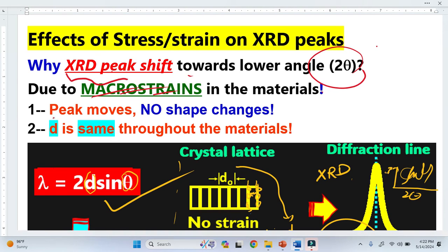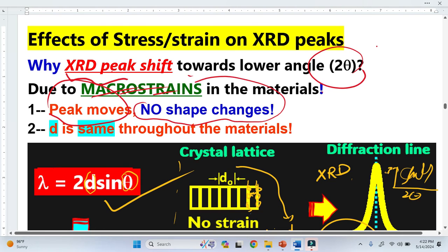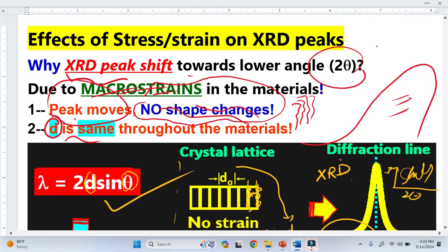But two things are very important. The peak moves, but there is no change in the shape. You see here? The shapes are exactly the same. The second important thing is the interplanar spacing is same throughout the material. These two are very important consequences of the macrostrain: that the peaks move to the left but no change in shape. The shapes are same because we don't have the broad shape peak. We get exactly the same peak. The d is same throughout the material.